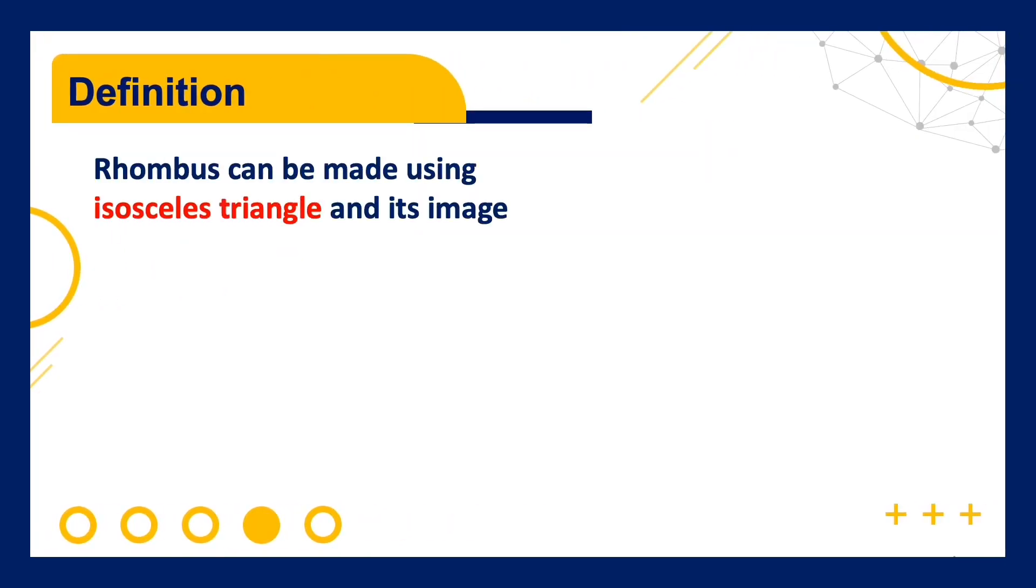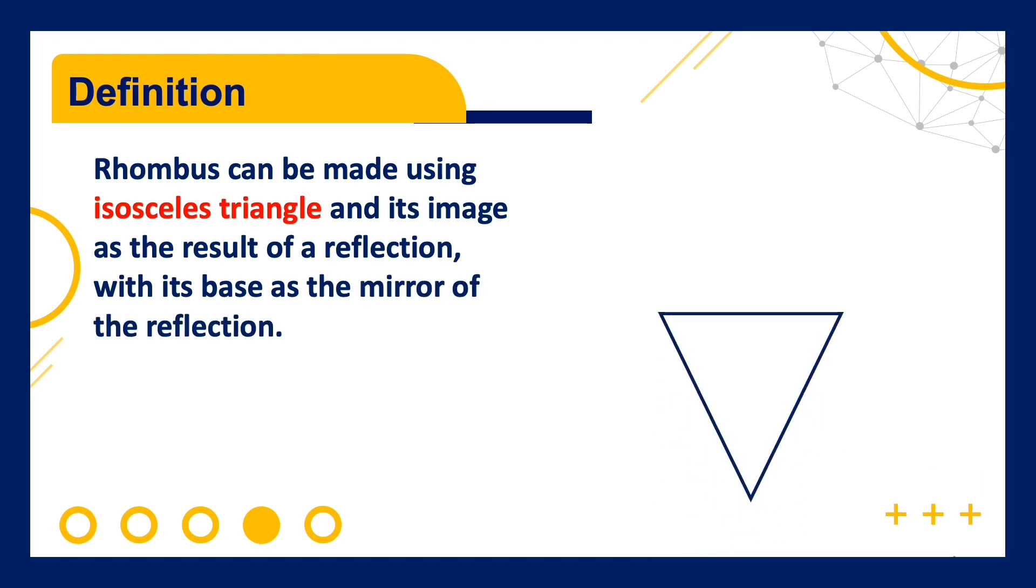A rhombus can be made using isosceles triangle and its image as the result of a reflection, with its base as the mirror of the reflection.